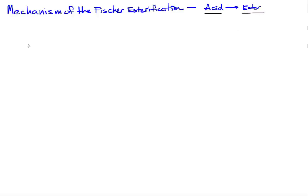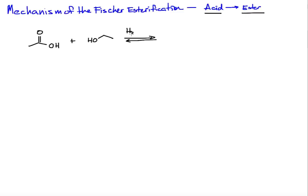We're going to start with acetic acid, the two-carbon carboxylic acid with an acid functional group. We're going to react that with our two-carbon alcohol, ethanol, in the presence of sulfuric acid, H2SO4. The product we're going to get is an ester — ethyl acetate — and our byproduct is water.